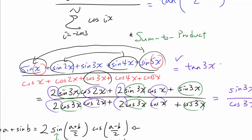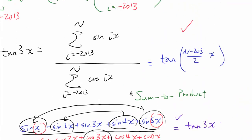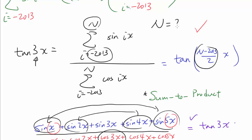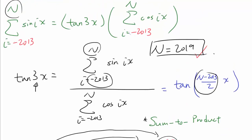Going back to the original problem, we apply the same reasoning: add sine nx with sine of negative 2013x, sine of (n−1)x with sine of negative 2012x, and so on. Factoring out the common terms gives tangent of ((n − 2013)/2)x. Setting this equal to tangent of 3x means (n − 2013)/2 = 3, which immediately implies n equals 2019. And we are done — the answer to this question is n = 2019.